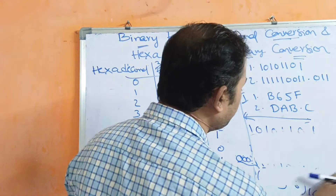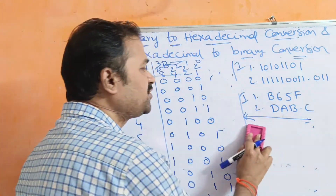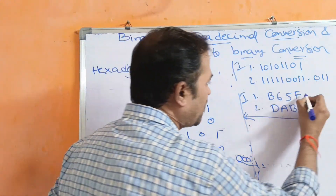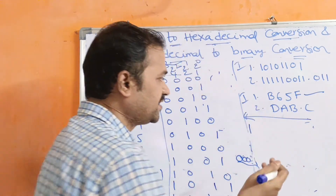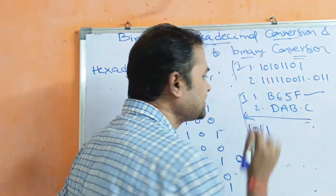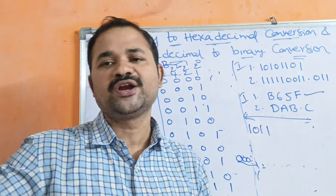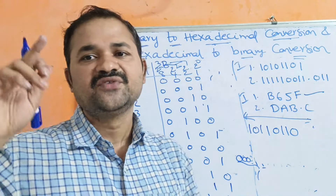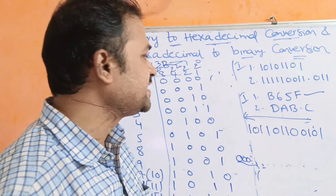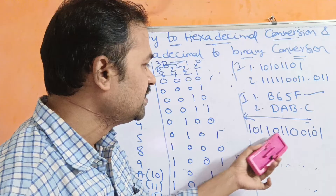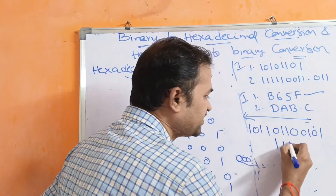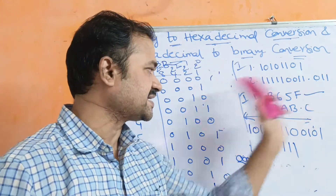Now let us solve the remaining two examples, which are hexadecimal to binary conversion. The first is B 6 5 1 F. B means 11, and 11 means 8 plus 2 plus 1, so we write 1 0 1 1. Next, 6 means 4 plus 2, so we write 0 1 1 0. Next, 5 means 4 plus 1, so we write 0 1 0 1. 1 in binary is 0 0 0 1. F means all 1s, so we write 1 1 1 1. This is the binary notation for this hexadecimal number.